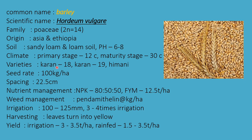Varieties are Karan 18, Karan 19, and Himani. Seed rate is 100 kg per hectare and spacing is 22.5 cm. Nutrient management is NPK 80:50:50; phosphorus and potassium are applied in basal doses. FYM is 12.5 tons per hectare. Weed management uses pendimethalin, a pre-emergent herbicide. Irrigation required is 100 to 125 mm, given 3 to 4 times. Harvesting when the crop turns yellowish; yield is 3 to 3.5 tons per hectare under irrigation and 1.5 to 3.5 tons in rainfed conditions.